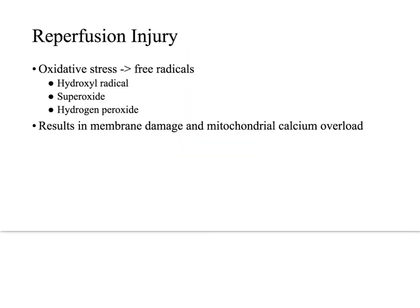As we said before, sometimes you can reverse the injury and have what's called reversible injury. However, when that occurs, the cells are at risk for reperfusion injury. Reperfusion injury occurs when excessive ATP consumption leads to an accumulation of the purine catabolites hypoxanthine and xanthine. When reperfusion injury occurs, the influx of oxygen is metabolized by xanthine oxidase to make superoxide and hydrogen peroxide, which cause membrane damage and mitochondrial calcium overload, leading to the opening of a large conductance pore on the mitochondrial membrane, where escape of ATP and solutes leads to apoptosis.